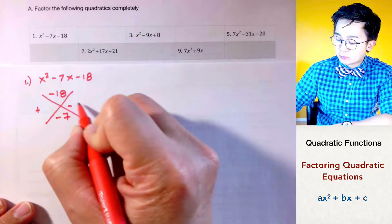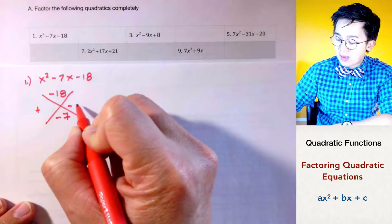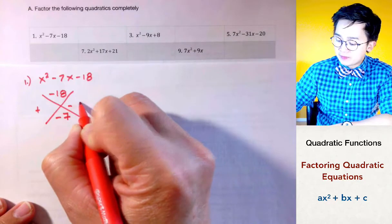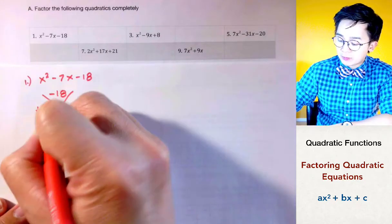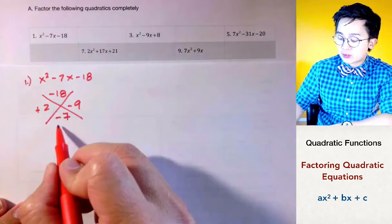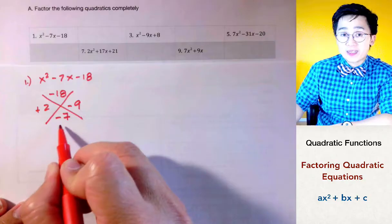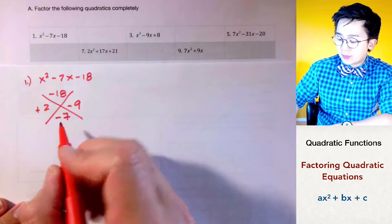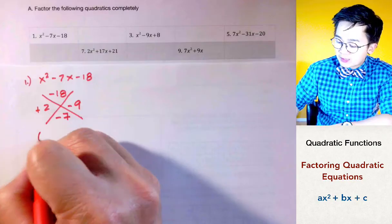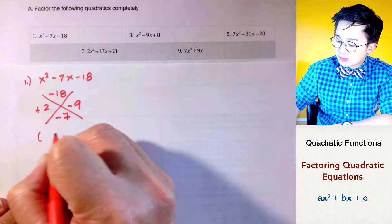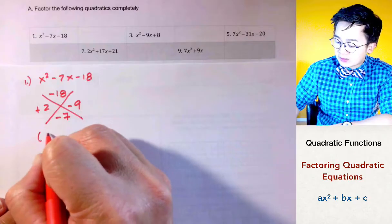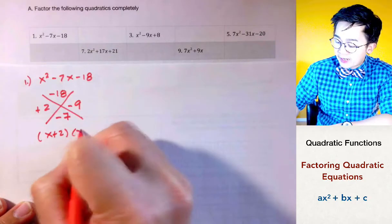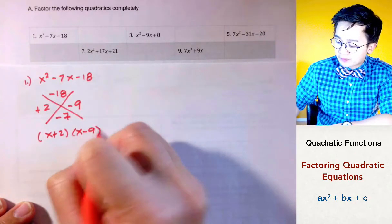So 9 would be negative and 2 would be positive, because you want a negative sum when you add them up. Therefore, the factors of x squared minus 7x minus 18 are (x + 2) and (x − 9).